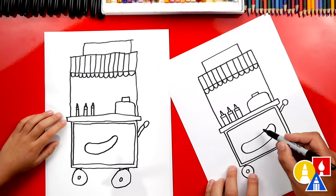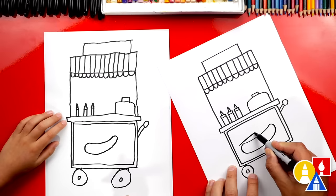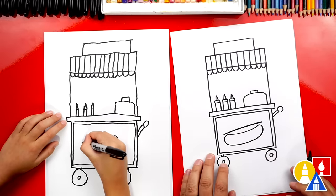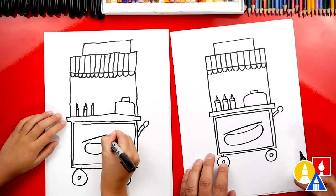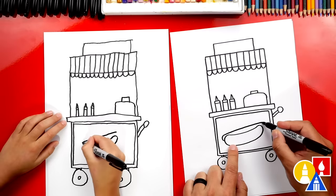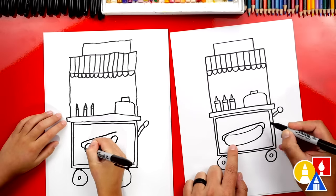And then we're going to draw our hot dog inside. We're going to draw a straight line that comes across. It's going to be a big hot dog. And then let's curve for the left side of the hot dog and then the right side of the hot dog.